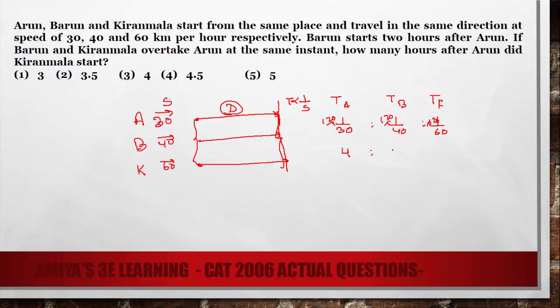Here we have to answer in the gap. The gap is 1 between A and B, gap is 1 between B and Kiranmala, and gap is 2 between A and Kiranmala.